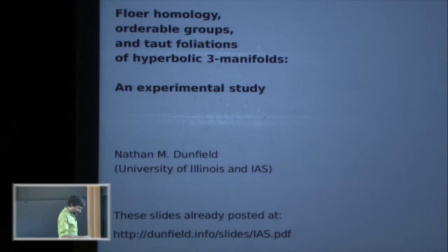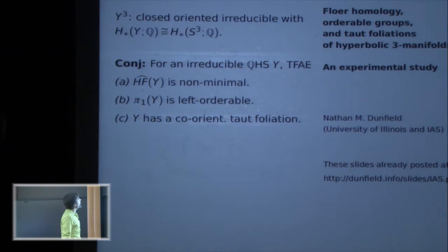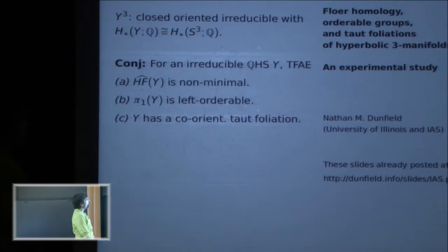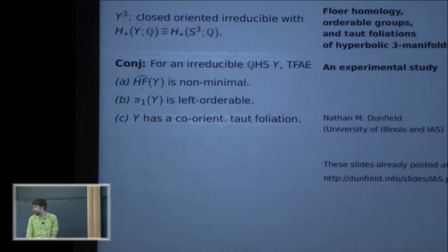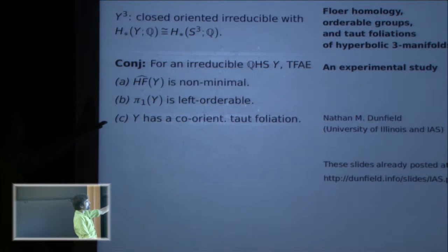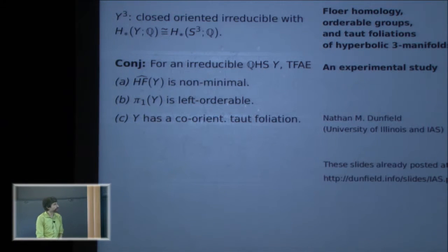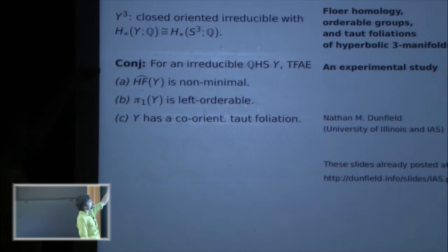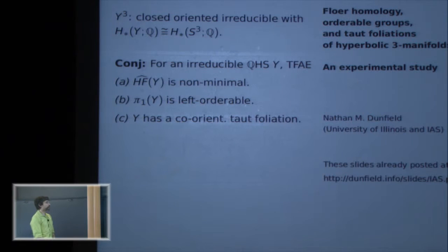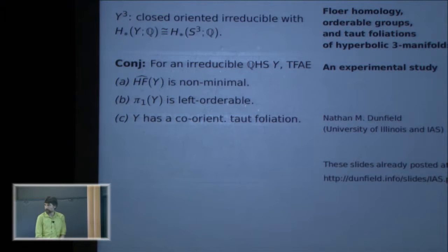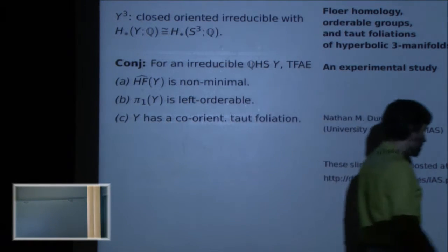Since I'm the first speaker, I'll need to define all my terms. The context for today's talk is I'm going to be interested in closed oriented irreducible rational homology spheres — rational homology the same as that of the three-sphere. The conjecture I want to talk about is that for an irreducible rational homology three-sphere, the following three things are equivalent: it has non-minimal Heegaard Floer homology, the fundamental group is left orderable, and the manifold has a co-orientable taut foliation.